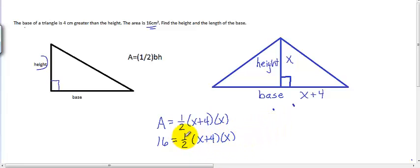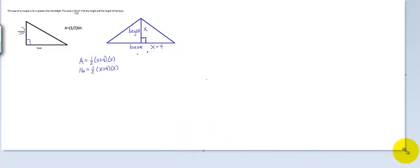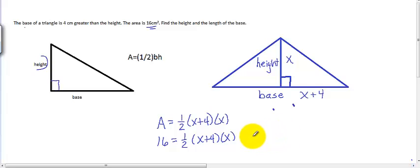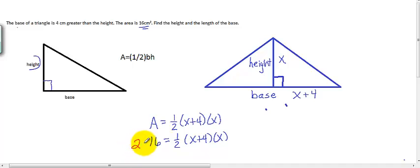All right, now, whenever you have to solve an equation that has a fraction in it, it's a good idea to go ahead and clear that fraction, if possible, by multiplying both sides by the denominator. In this case, the denominator being 2. I'm going to multiply both sides of the equation by 2. So that means that I'm going to have 32 equals x plus 4 times x.